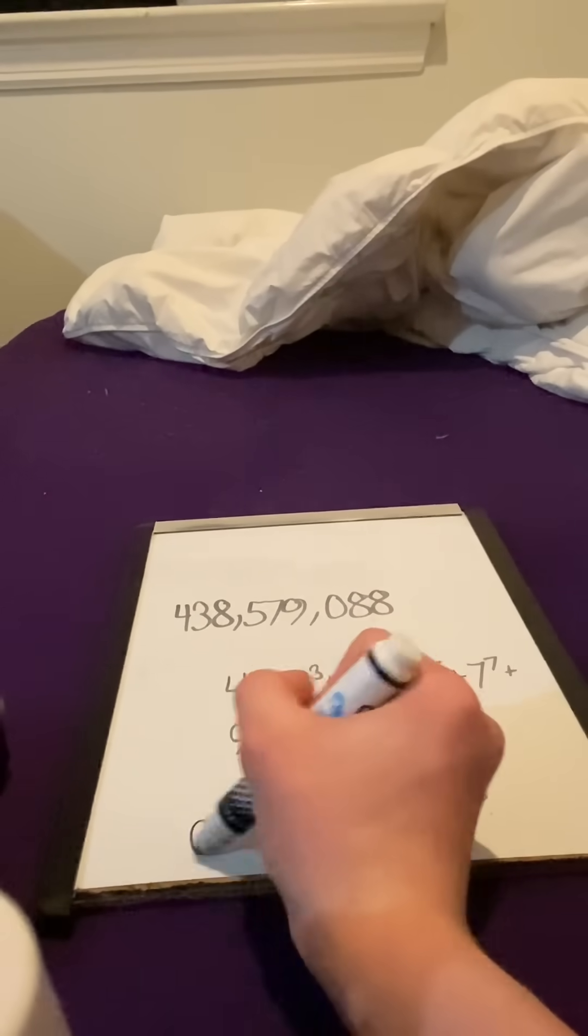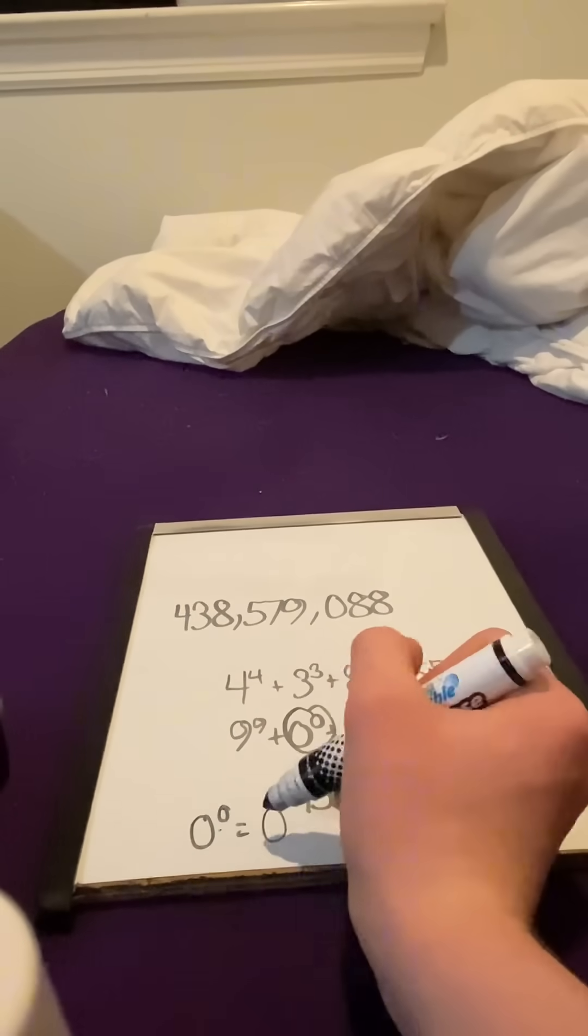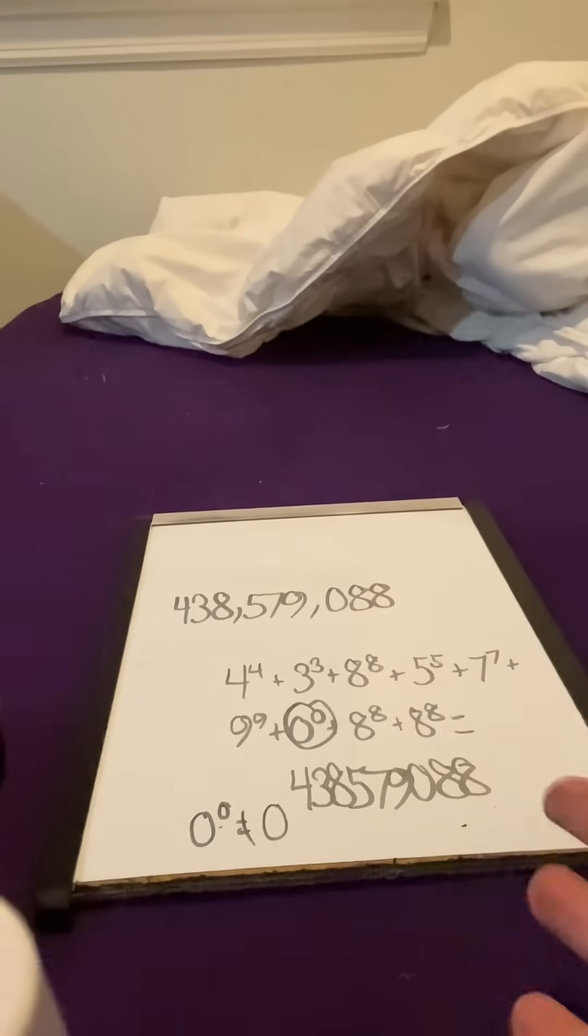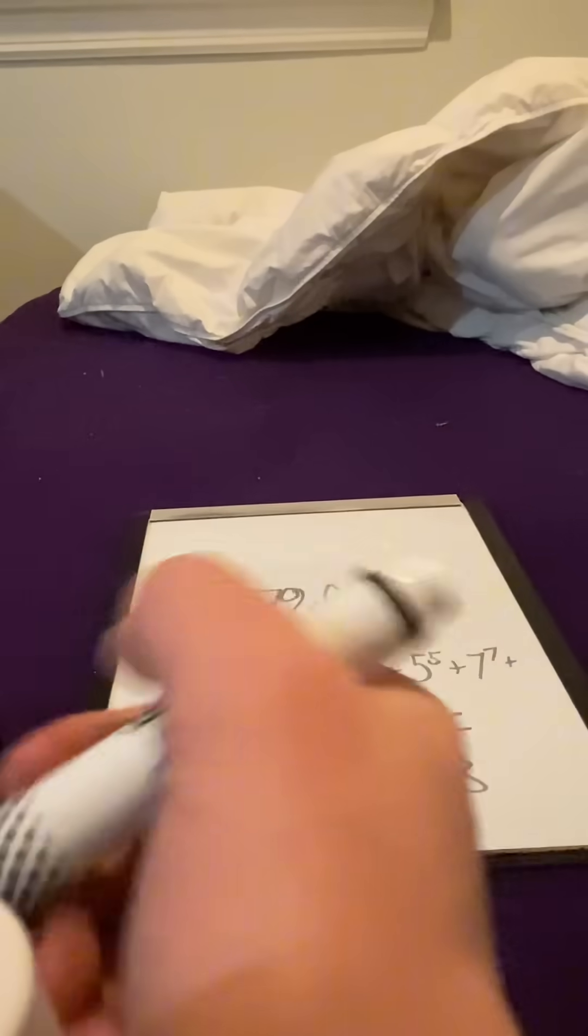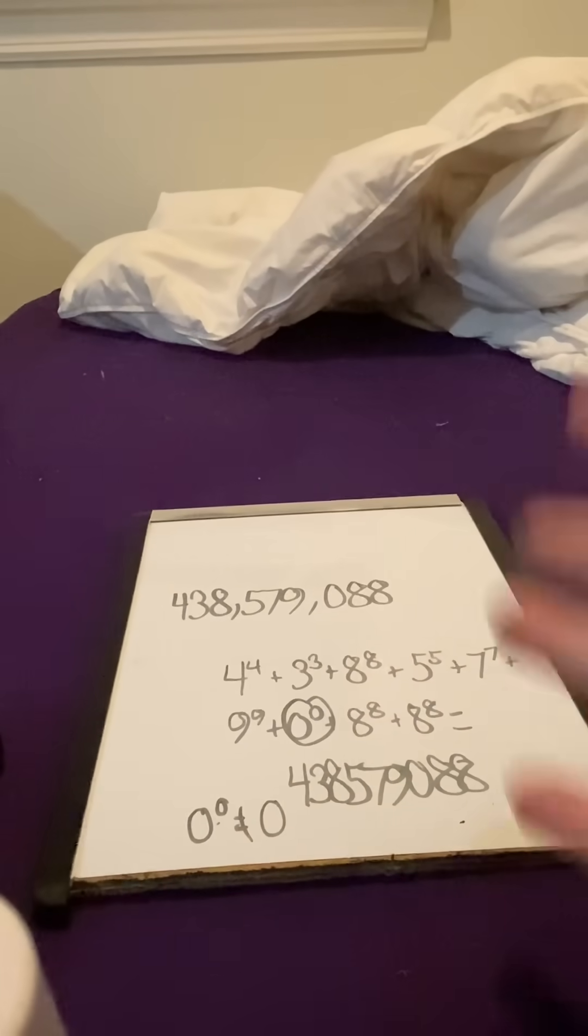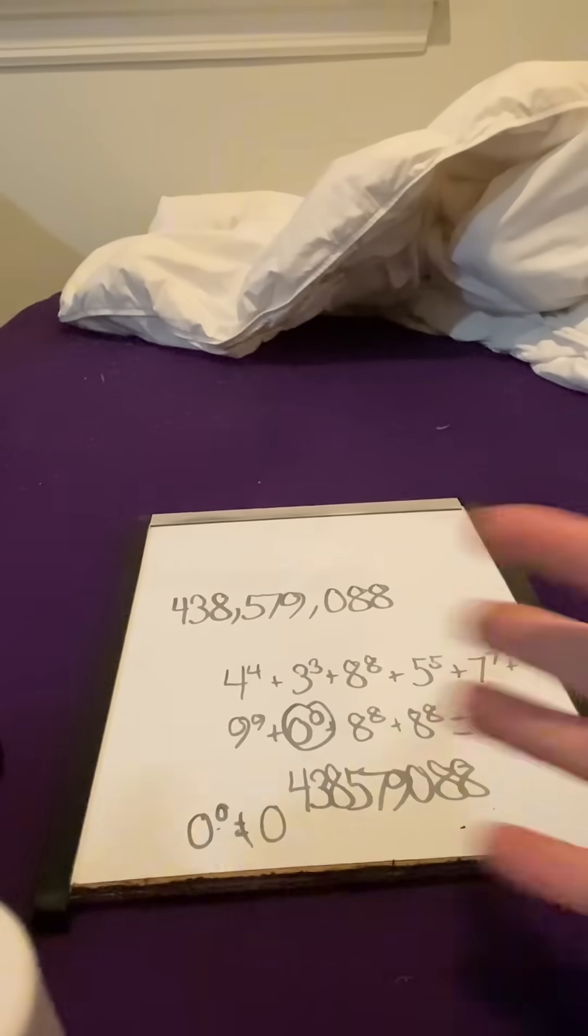And in order for this to work, 0 to the 0 must equal 0, which is not true. I don't even know what 0 to the 0 is. If you guys can tell me, that'd be cool, though. But 0 to the 0, what does 0 to the 0 equal?